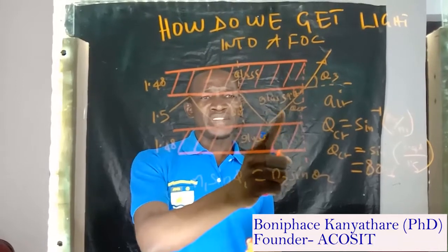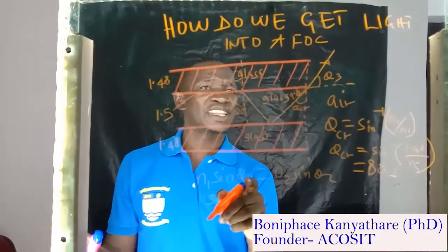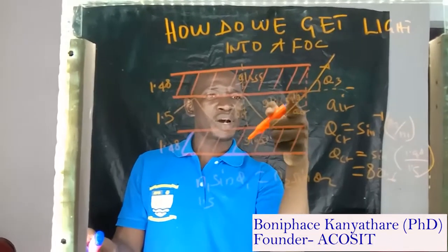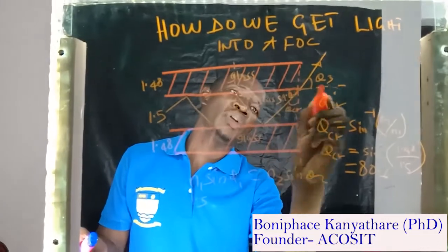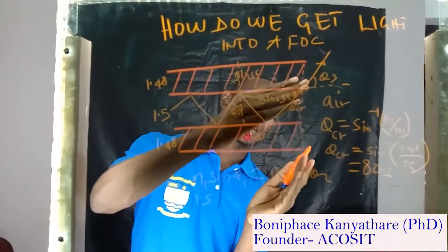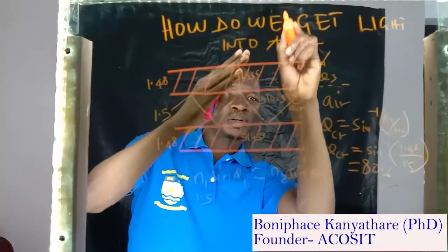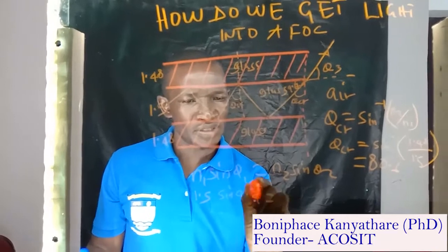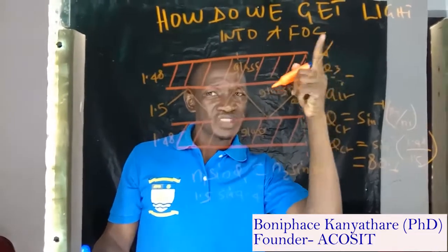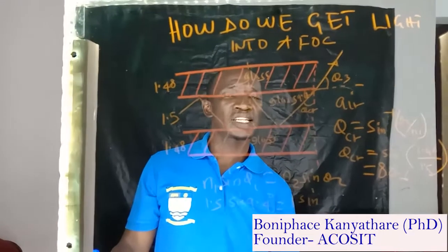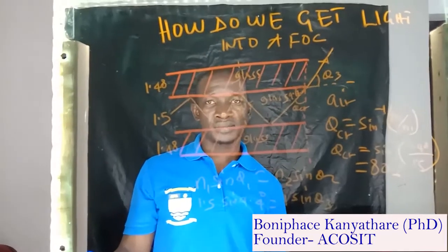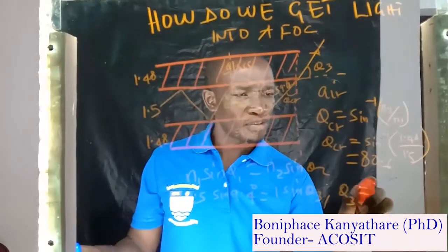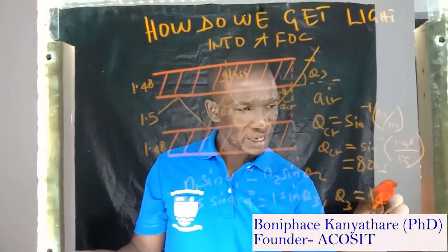We are talking about glass within the core, so: 1.5 times sine theta 1, where theta 1 is 9.4 degrees. The normal we are talking about is this normal here — we are considering from glass to air, so our normal is now this one. With that, this will be 1.5 times sine 9.4 degrees equals N2 times sine theta 2 — where N2 is air, refractive index of air is 1, times sine theta 2. What is theta 2? That is what we are looking for — it is theta 3. If you calculate this, you will get our theta 3 equals something around 14.18 degrees.